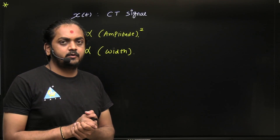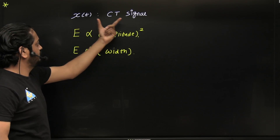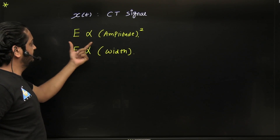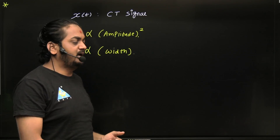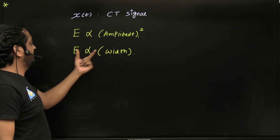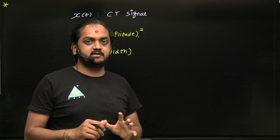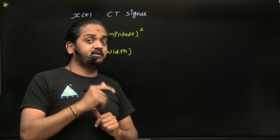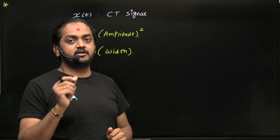Hello dear students. Do you know if x(t) is a continuous time signal, then its energy is directly proportional to the square of the amplitude and directly proportional to the width of the given signal. So if there is a change in amplitude or change in width, then there is a change in energy of the signal.